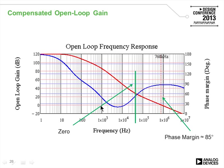This shows the open-loop frequency response with the capacitor added. The open-loop gain and phase are plotted, and the phase margin when we cross zero dB gain is about 85 degrees — a reasonable amount. The fact that phase margin goes below 45 degrees at lower frequencies doesn't really matter, because at that point we have enough open-loop gain that we're far enough away from the zero crossing. This is called conditional stability.